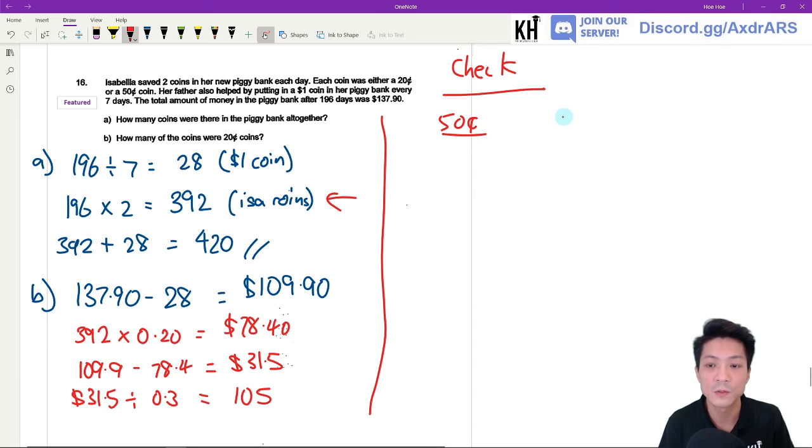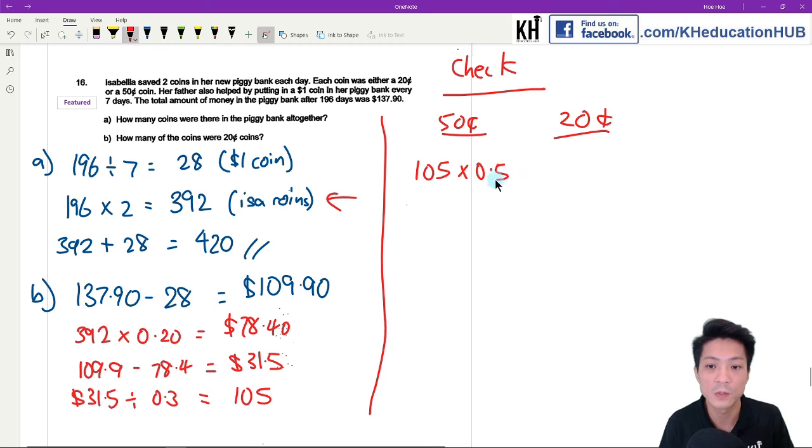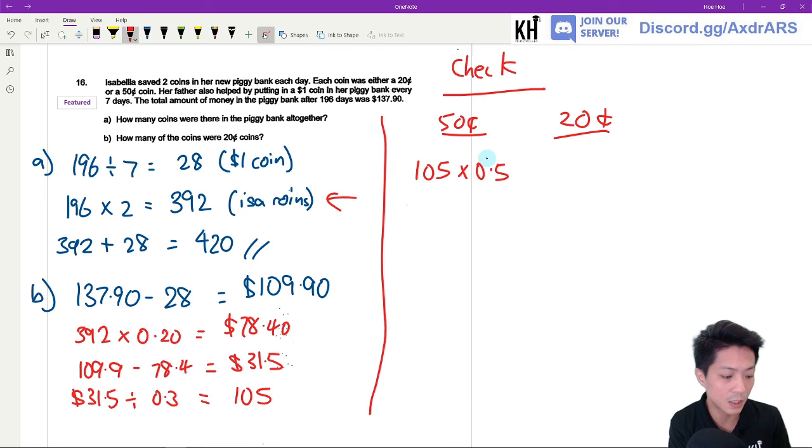50 cents, 20 cents. If there's 105 50-cent coins, that means I'm gonna use 392 minus 105, that means there's gonna be 287 20-cent coins.